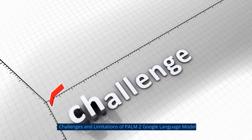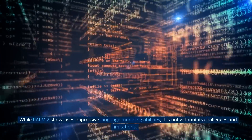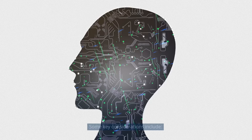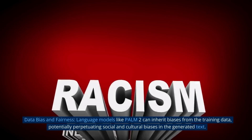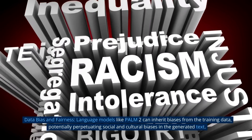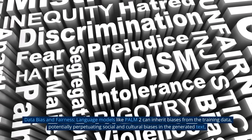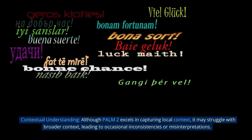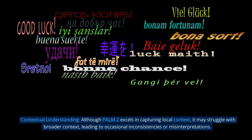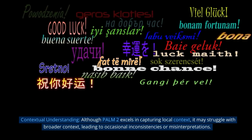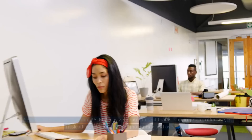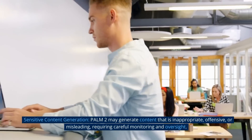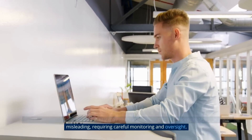While POM2 showcases impressive language modeling abilities, it is not without its challenges and limitations. Language models like POM2 can inherit biases from training data, potentially perpetuating social and cultural biases in generated text. Although POM2 excels in capturing local context, it may struggle with broader context, leading to occasional inconsistencies or misinterpretations. POM2 may also generate content that is inappropriate, offensive, or misleading, requiring careful monitoring and oversight.